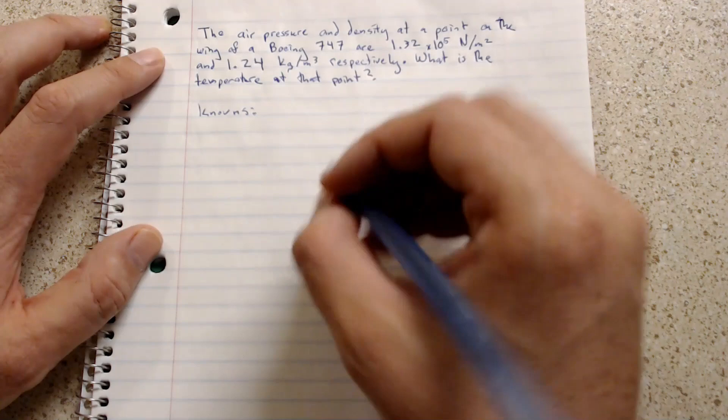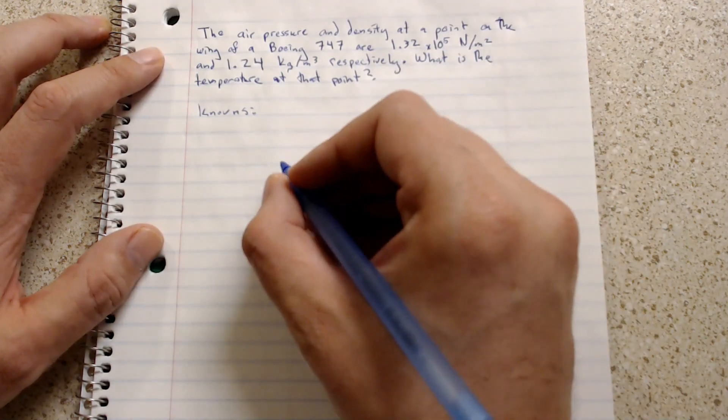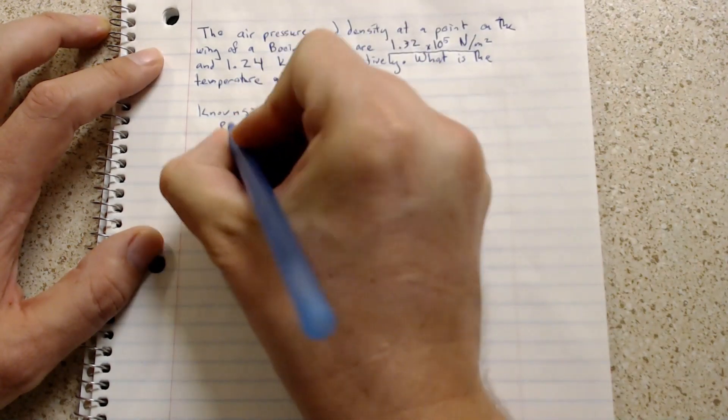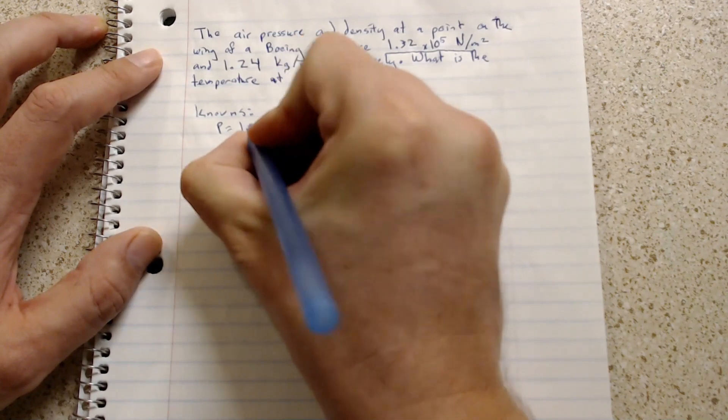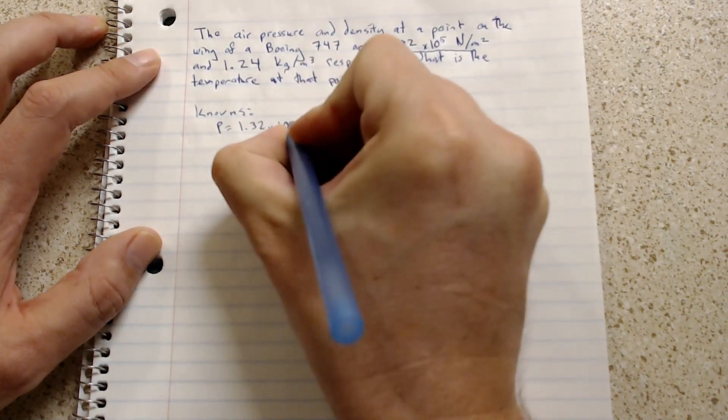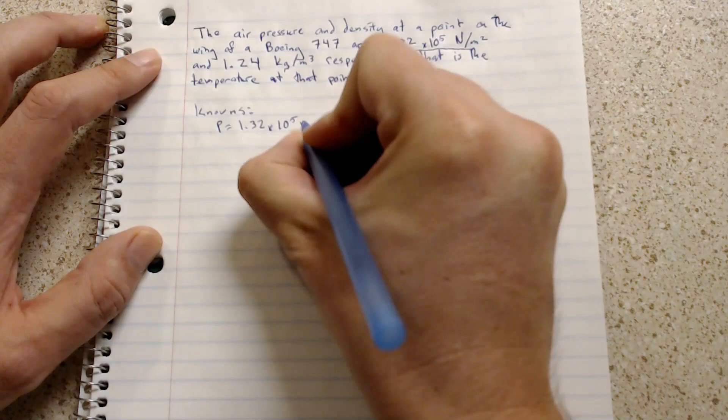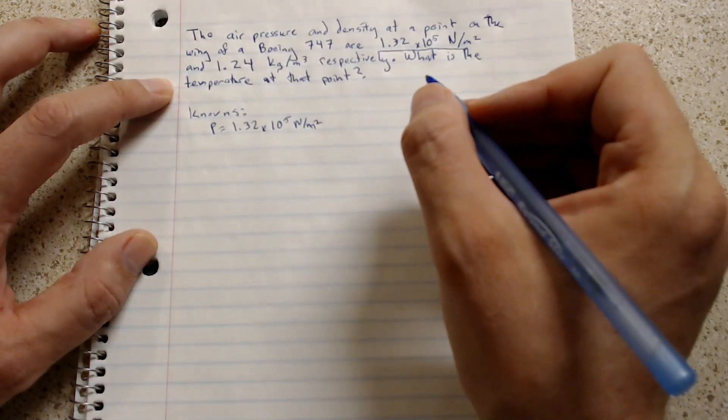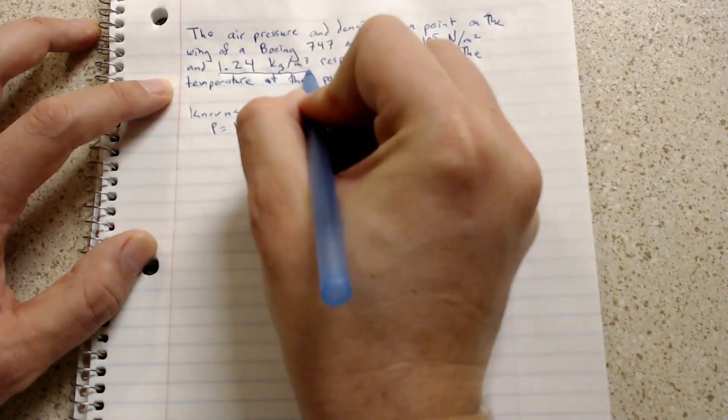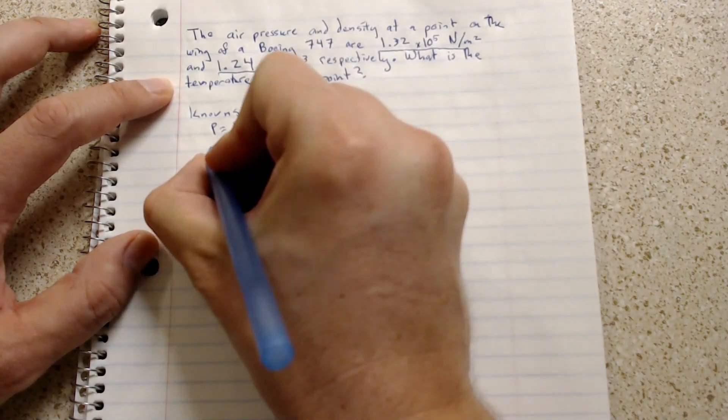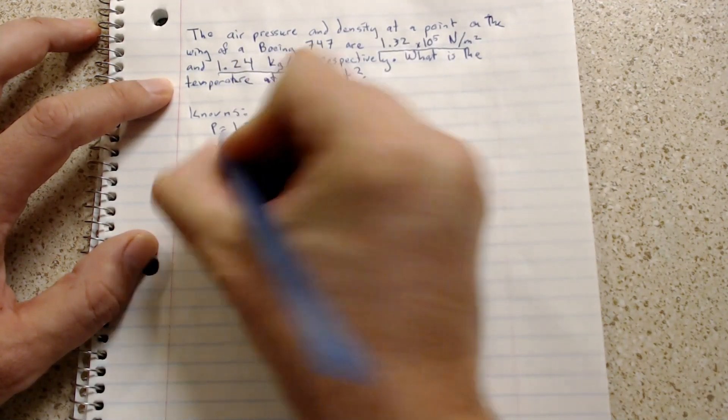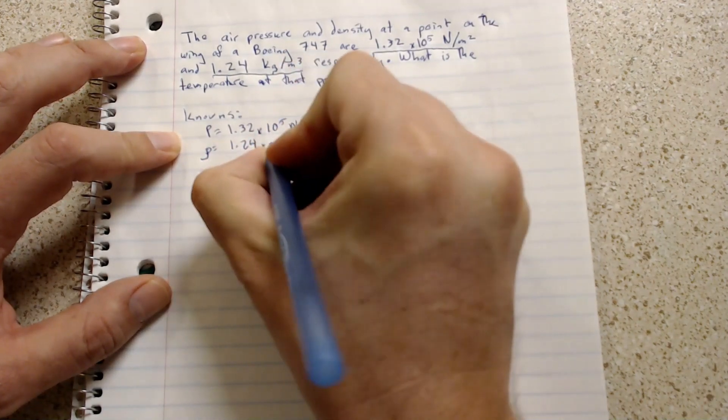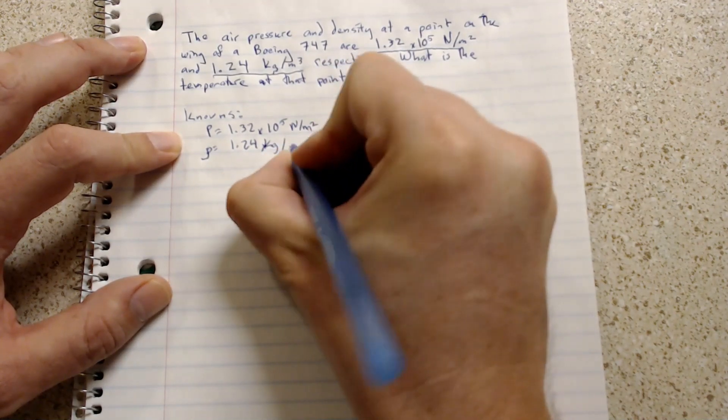Let's pull out the knowns of the equation. The first known that we have is the air pressure. The air pressure is going to be 1.32 times 10 to the 5th newtons per meter squared. There's also another known here. We have the density of the air. Density we write with the rho. So density is going to be 1.24 kilograms per meters cubed.